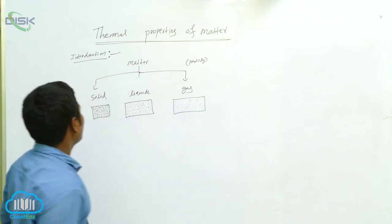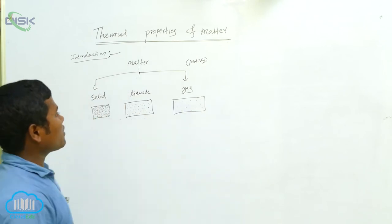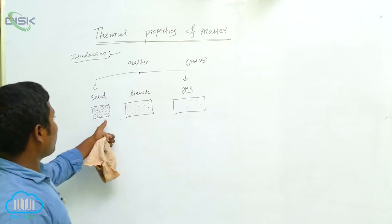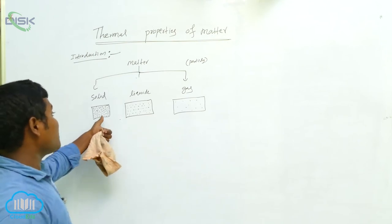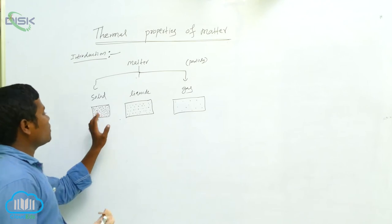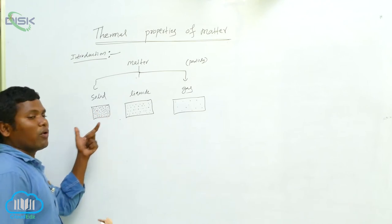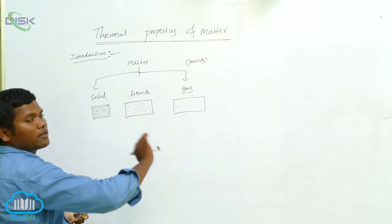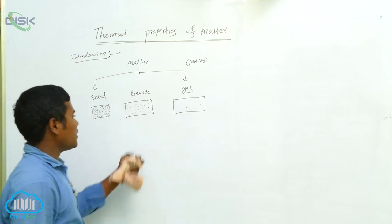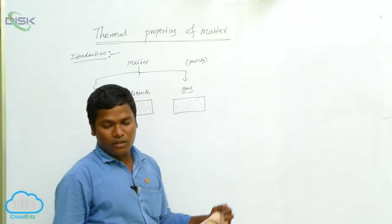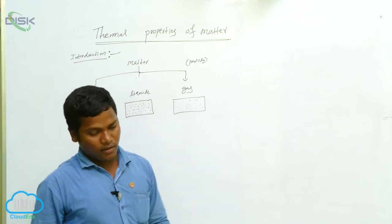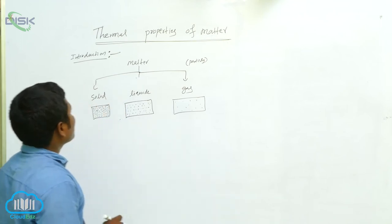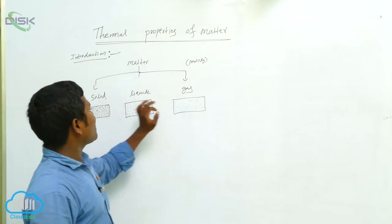This is a solid, this is a liquid, and that is gas. In solid, particles are very neatly arranged and very tightly bounded. In liquid, there is a little bit of gap between the particles. In gas, the particles have a very long distance between them.